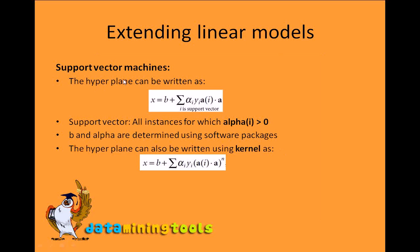The equation of the maximum marginal hyperplane can be written as: x = b + Σ αᵢ yᵢ (aᵢ · a), which is a dot product, where i varies from 1 to the number of support vectors. All instances for which αᵢ > 0 are support vectors. The values of b and alpha are determined using commonly available software packages. The hyperplane can also be written using kernels — a transformation from one dimensional configuration to another. For example, (aᵢ · a)ⁿ is a polynomial kernel.